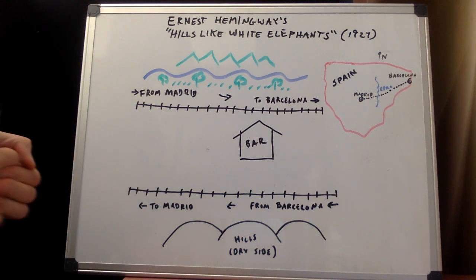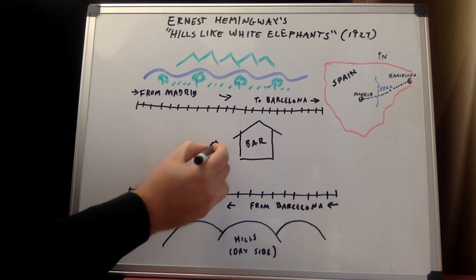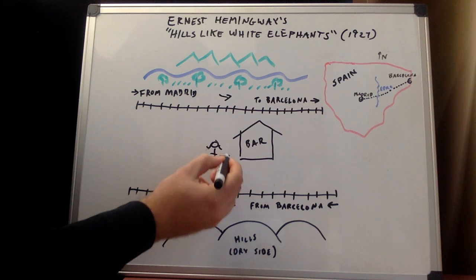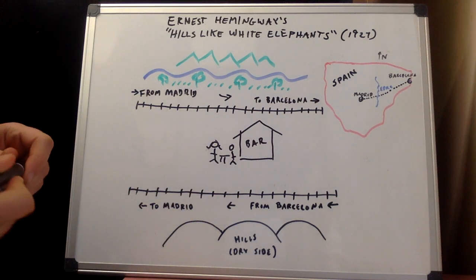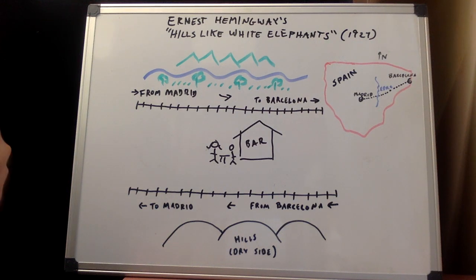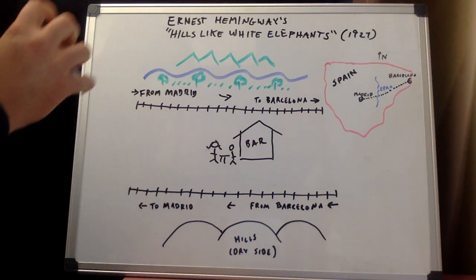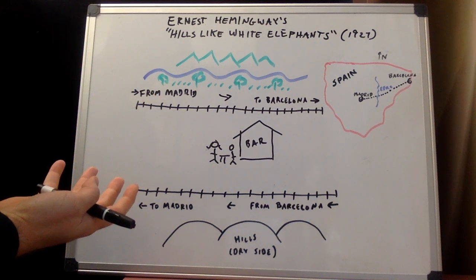If you've read the story — and you should have before watching this video — you'll notice there are two characters sitting in a bar. There is a girl named Jig and an American man whose name we never get. They're sitting outside of a bar between two train tracks having some beers as they wait for the express train to Madrid. They never explicitly mention what they're discussing, though they're having a conflict and trying to make a decision. They're discussing a potential abortion that Jig is going to have, and whether or not they're going to go through with it.